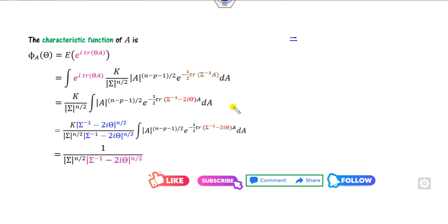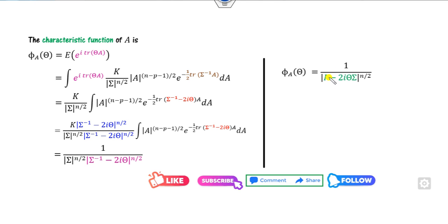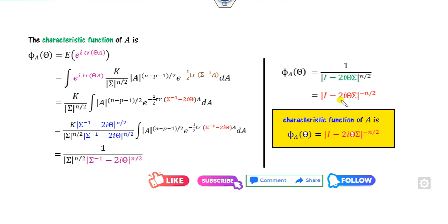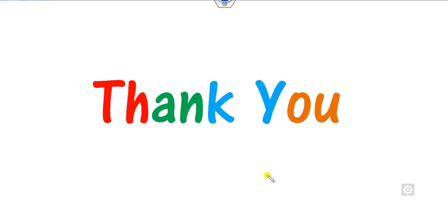Therefore, this number is 1 over this expression. I can write n/2 and take out Sigma — giving Sigma inverse minus 2·iota·Sigma. The value of Sigma into Sigma inverse is the identity matrix I_P of dimension P. So I write this value as the identity matrix, and returning n/2 to the numerator gives the exponent minus n/2. This is the characteristic function of the Wishart distribution. With a very short proof, you can obtain the characteristic function of capital A. We will see the next lecture, which is a very important topic on the properties of the Wishart distribution. Like, share, and comment on this video. Best of luck, students.